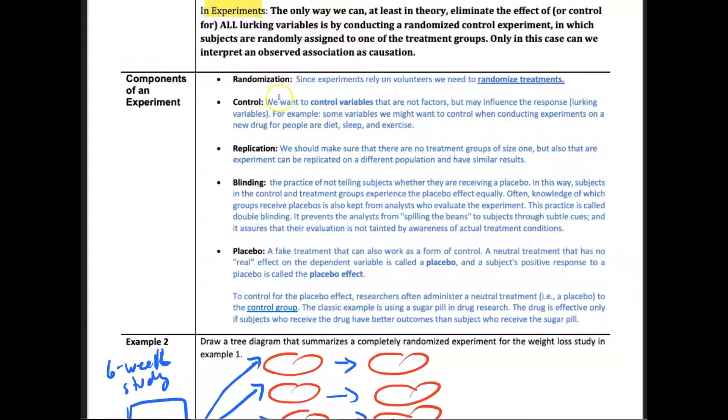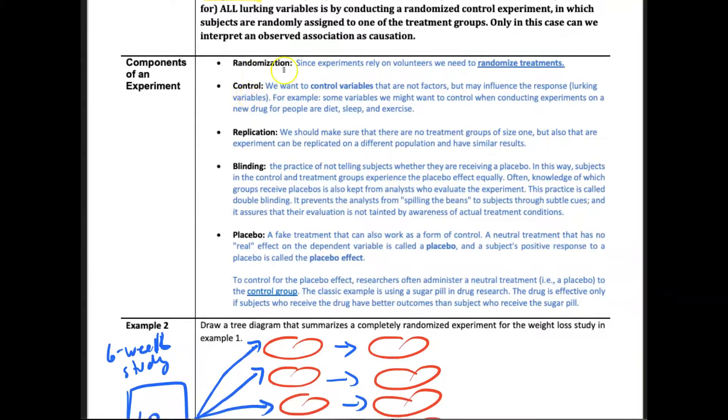You want to be able to think about some of these terms. Randomization—you want to randomize treatments, meaning that when you're going to do the experiment, who gets these treatments? We want to randomize that process.